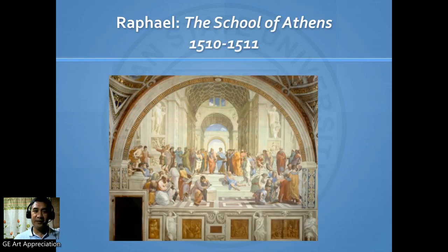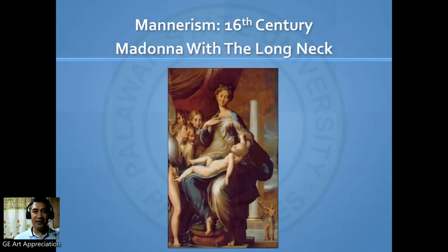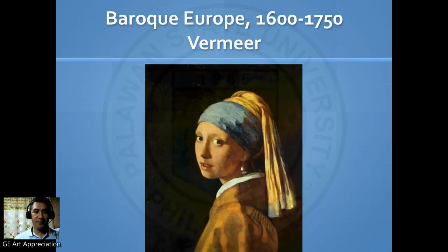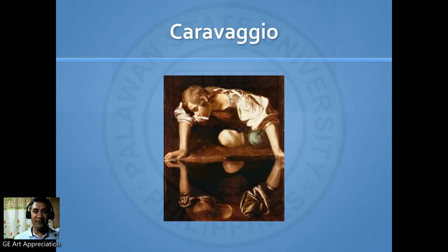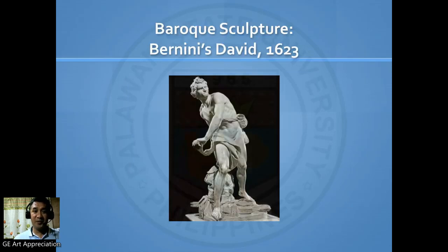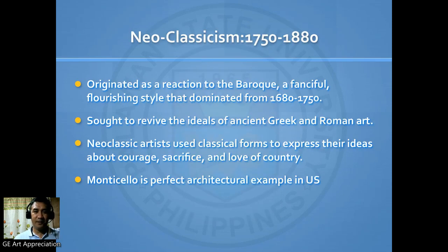Here we have Raphael's School of Athens, from 1510 to 1511. We have Mannerism in the 16th century — Madonna with the Long Neck. We also have Baroque art from 1600 to 1750. Here we have Caravaggio, Rembrandt, and Baroque sculpture — Bernini's David in 1623.